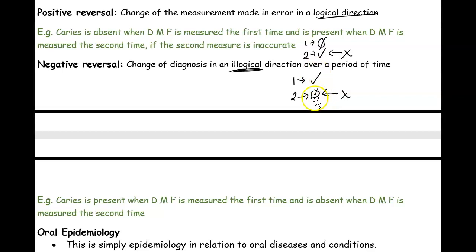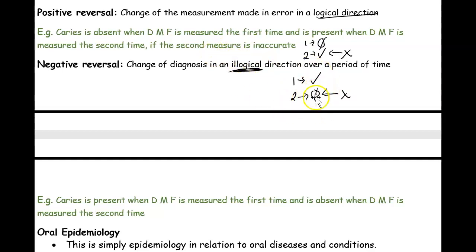Sometimes caries can reverse with fluoride treatment, but looking at the grand scheme, this is just an illustrative example. It doesn't have to be caries — for example, saying someone has no cancer and then they have cancer is logical direction (positive reversal); saying someone has cancer and then suddenly they don't, without treatment, doesn't make sense — that's illogical, which is negative reversal.